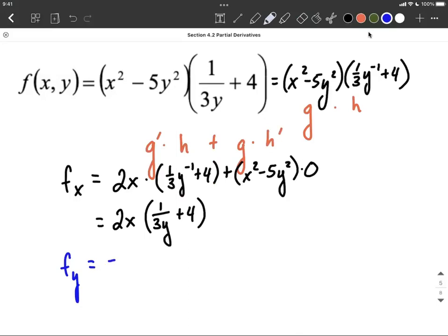So to use the power rule, we're going to bring the exponent down in front, bring the 2 down, multiply it by the 5, makes negative 10 in our case. Reduce the exponent by 1, so that'll be y to the first power. Next, we're going to multiply that by h, so 1 third y to the negative first power plus 4.